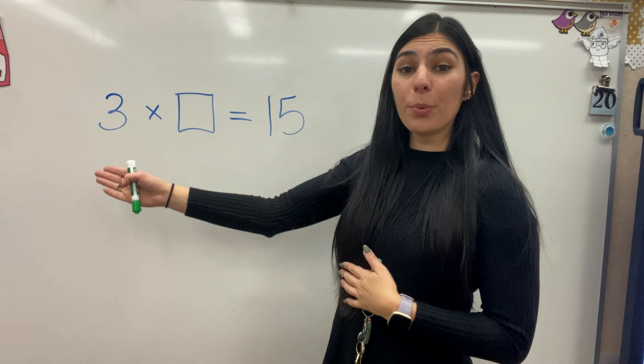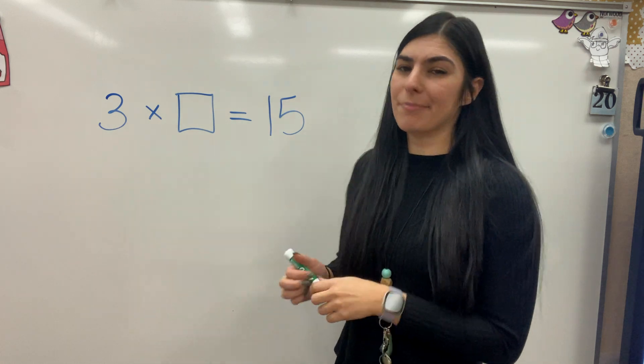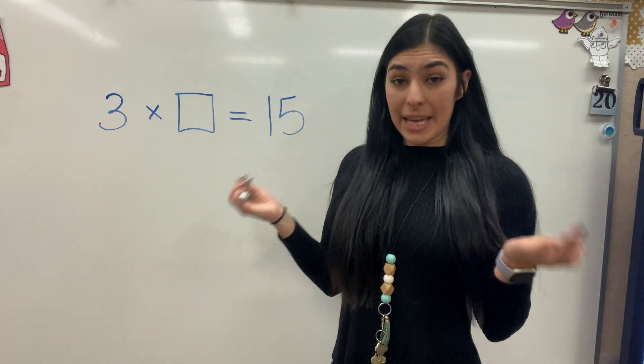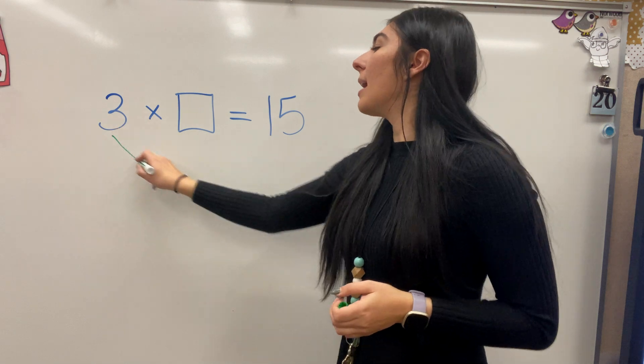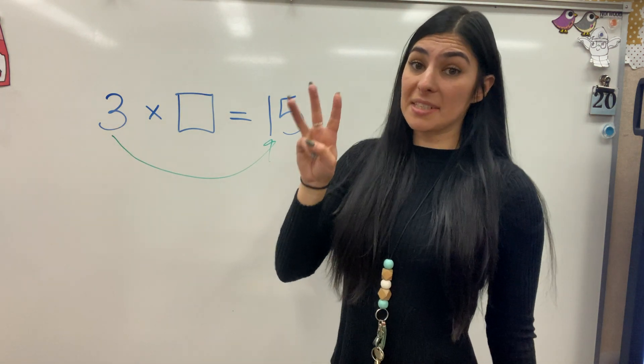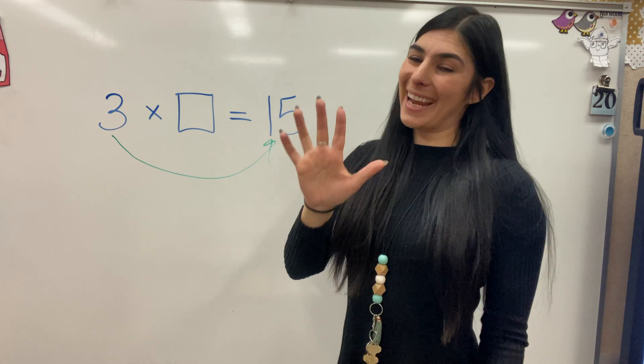Okay, so here our equation is 3 times what equals 15. Now, first thing I can do is just skip count by 3 until I get to 15. 3, 6, 9, 12, 15. Answer's 5.